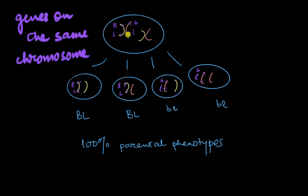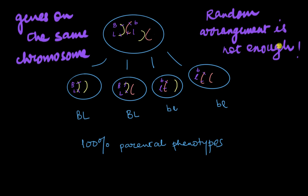However, simply having the genes on the same chromosome and randomly arranging those chromosomes gives us only parental lookalikes and no hybrids. We know that didn't happen in Morgan's case — even if the numbers were low, there were some hybrids. So even though the genes are on the same chromosome, random arrangement alone isn't enough. We need a way to keep the genes on the same chromosome and still produce hybrids.